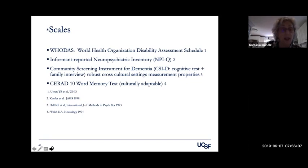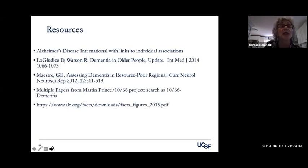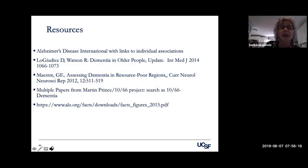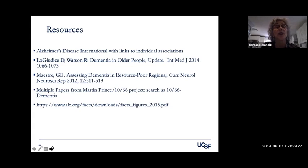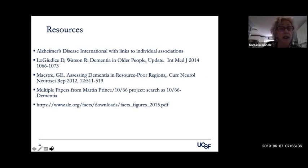When you can use an internationally validated scale, it's extremely helpful. Here are some resources that may be helpful in this area — the 10/66 project is a very good source of understanding about dementia in LAMEX, and the Alzheimer's Disease International is also an extremely important source, along with general information about dementia in older people. Thank you so much for listening.